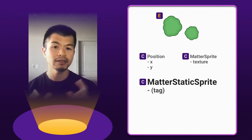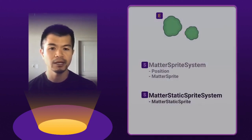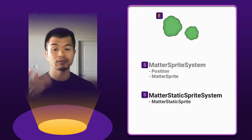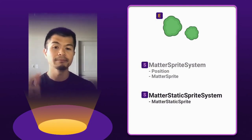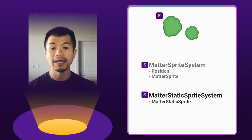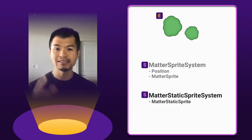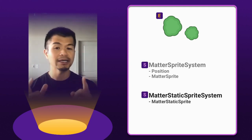Now let's look at the system we need for this setup. We've seen our matter sprite system previously. The new system is the matter static sprite system, and all it's going to do is take any entity with the matter static sprite component and set the isStatic property to true. Now let's see how all this works in code.